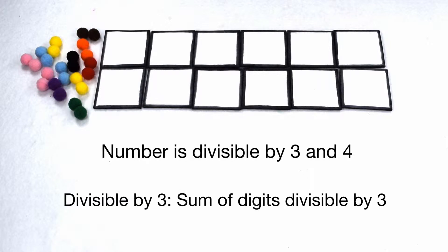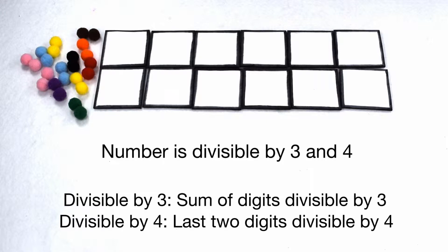If a number is divisible by 3, that means the sum of its digits is divisible by 3. And if a number is divisible by 4, then the last two digits of that number are also divisible by 4.